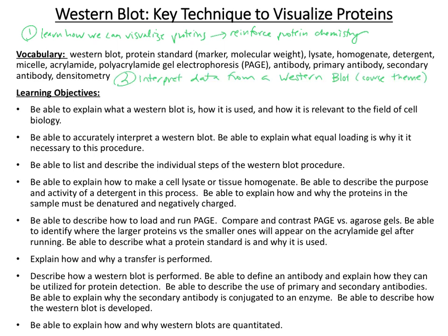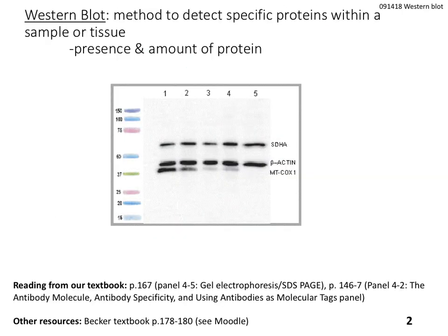Secondly, we're going to learn how to interpret data from a Western blot, which is a course theme. And we're going to go through the first few learning outcomes in this video. So a Western blot is a method to detect specific proteins within a sample or tissue — it can tell us about the presence and the amount of the protein. This is a Western blot here, and it looks a lot like a DNA gel. This is somewhat analogous to agarose gel electrophoresis as a way to visualize DNA.